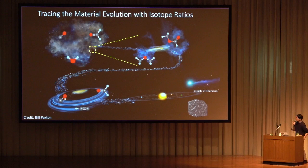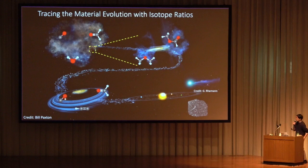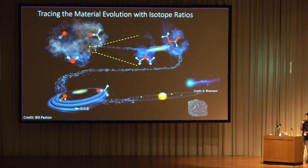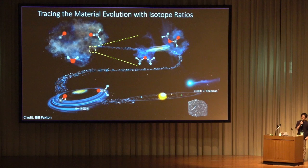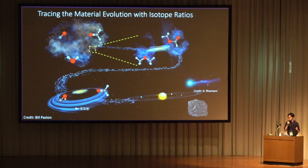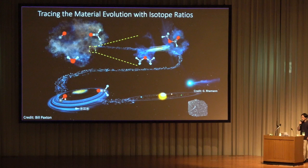Our solar system was formed through the gravitational collapse of the molecular cloud core and the subsequent formation of the disk around the young Sun. In the disk, dust grains grow into planetesimals and planetesimals grow into planets. Various molecules, including water and organics, have been detected in molecular clouds and also planet-forming disks. One of the ultimate goals of astrochemistry and cosmochemistry is to understand how molecules are formed in space and how molecules are supplied to the planetary system. For that goal, isotope ratios of volatile elements are powerful tools.